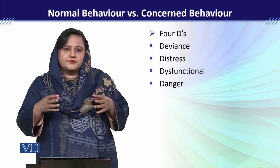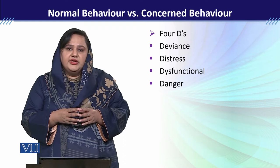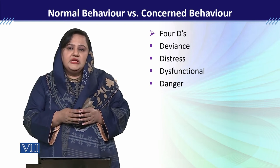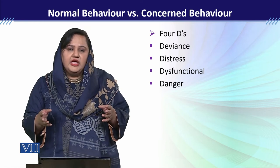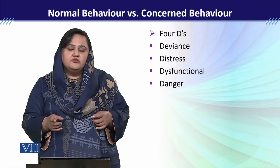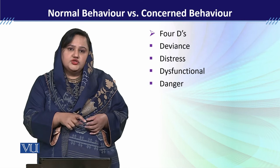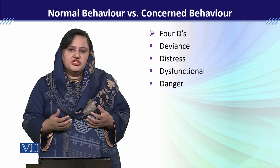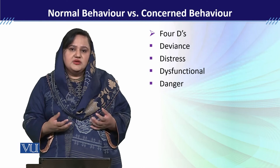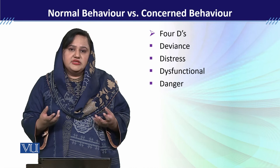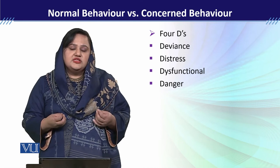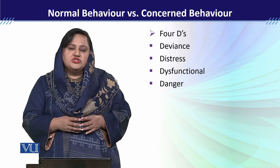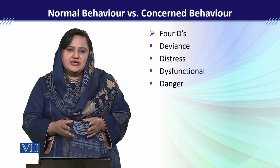Danger: abnormal behavior dangerous بھی ہو سکتا ہے اور کوئی بھی dangerous behavior abnormal بھی ہو سکتا ہے — لیکن اس کا مطلب یہ نہیں کہ ہر dangerous behavior exhibit کرنے والا abnormal ہے۔ بعض اوقات لوگ ایسے hallucinations یا delusions experience کرتے ہیں جس کی بنیاد پر وہ homicide یا suicide جیسی activities کر سکتے ہیں یا خود کو injured کر سکتے ہیں — اور یہ behavior abnormality کو predict کرتا ہے۔